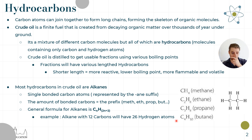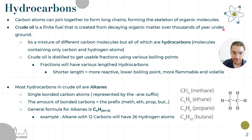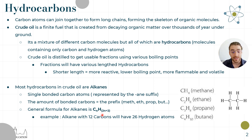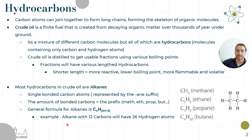If we have a lot of carbons, how do we know how many hydrogens are in the molecule? The formula is CnH(2n+2), where n is the number of carbons, and the number of hydrogens is two multiplied by the number of carbons plus two. For example, the alkane with 12 carbons: 12 × 2 = 24, plus 2 = 26, so it's C12H26.